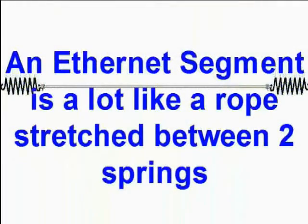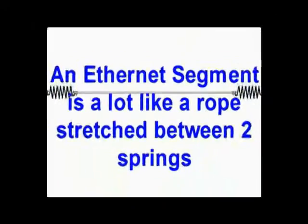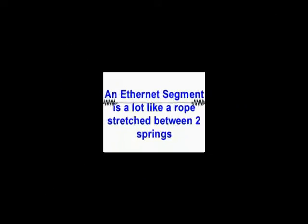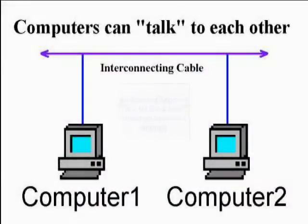It didn't take very long after computers were invented before scientists realized that they could do amazing and useful things by connecting two or more of them together and letting them send messages to each other. That way, they can share their work, or they can share printers, they can share disk drives and other resources.